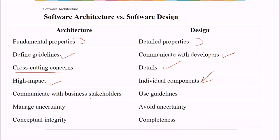design is all about the individual components. Architecture communicates with business stakeholders and design uses the guidelines. Architecture manages the uncertainty and design tries to avoid the uncertainty. Architecture is a conceptual integrity and design tells us the completeness.